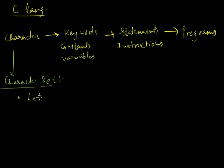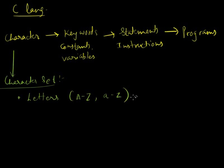We have letters from the alphabet — capital A to Z and small a to z. Apart from letters, we also have digits from 0 to 9.